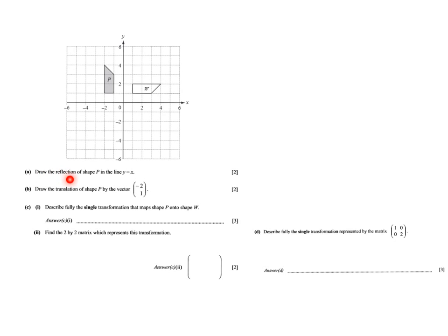It says draw the reflection of shape P in the line y equals x. It's always important to realise that transformations either change the size or the position of a particular object. We have different types: reflections, translations, rotations, and enlargements. The line of reflection is y equals x, so I'm going to draw that line using a ruler on my tablet screen.